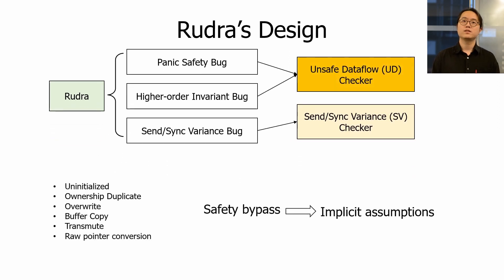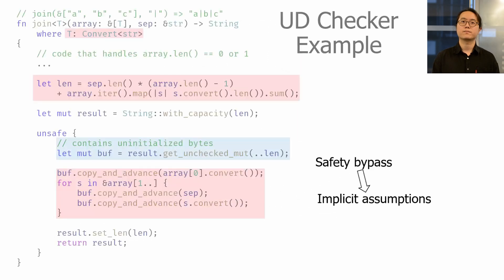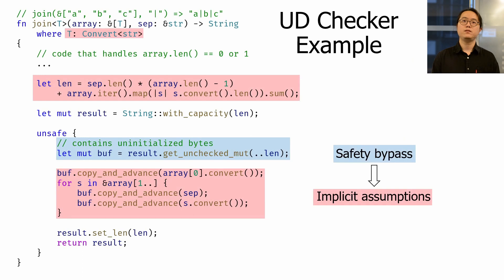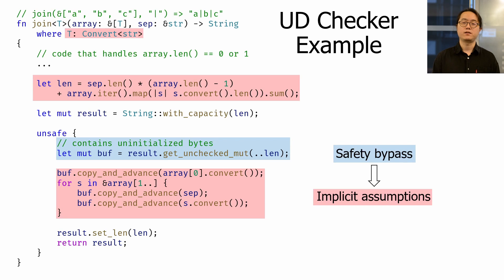The unsafe data flow checker models six types of safety bypasses, then uses coarse-grained data flow analysis to detect higher-order invariant bugs. The algorithm finds a data flow from a safety bypass to the location where implicit assumptions are made. In the join example, the checker detects the safety bypass (marked in blue) and the assumptions on user-provided logic (marked in red), then detects the data flow between them and generates a warning. The detail of the algorithm is described in our paper.